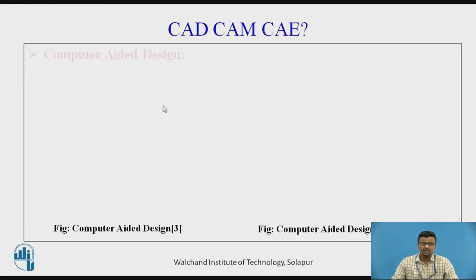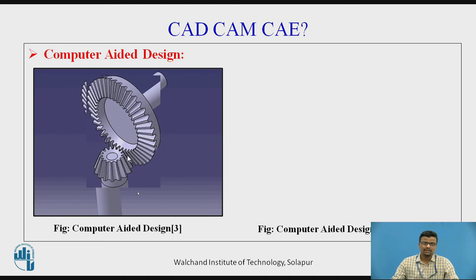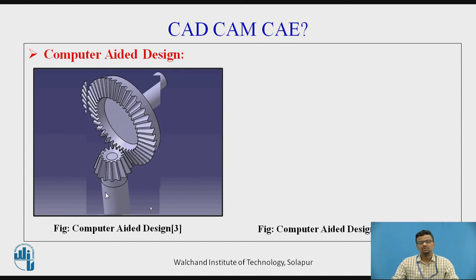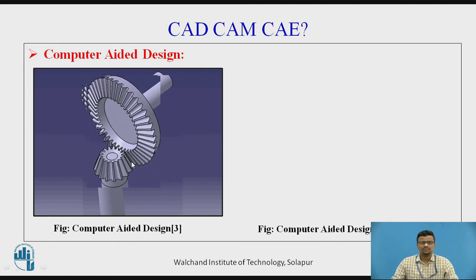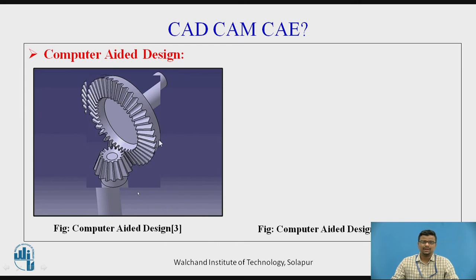I will show you different applications in computer-aided design. In front of you is a model with the simulation of a bevel gear — the meshing of the bevel gear. You can see both bevel gears are rotating and meshing is also provided. This is a horizontal shaft provided to one bevel gear and a vertical shaft provided to the other bevel gear.